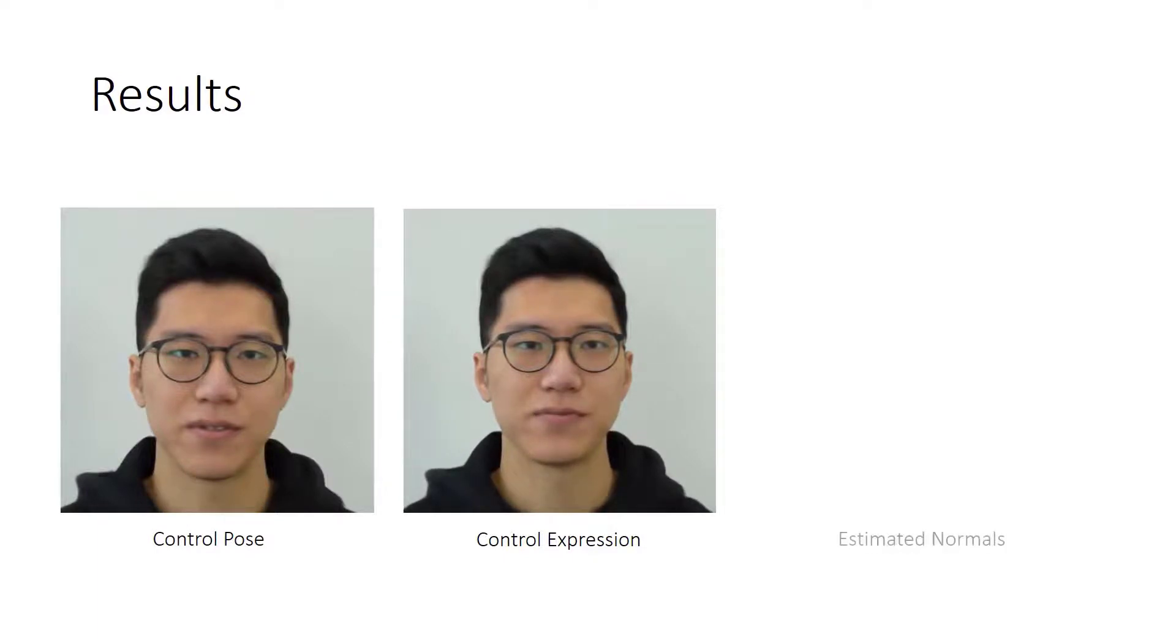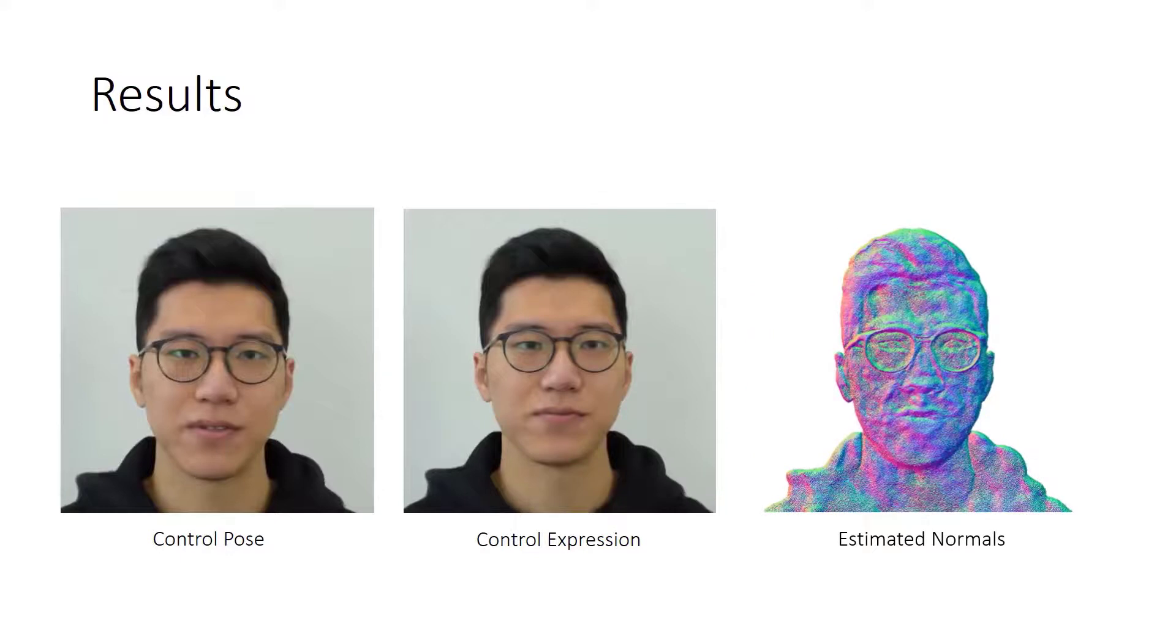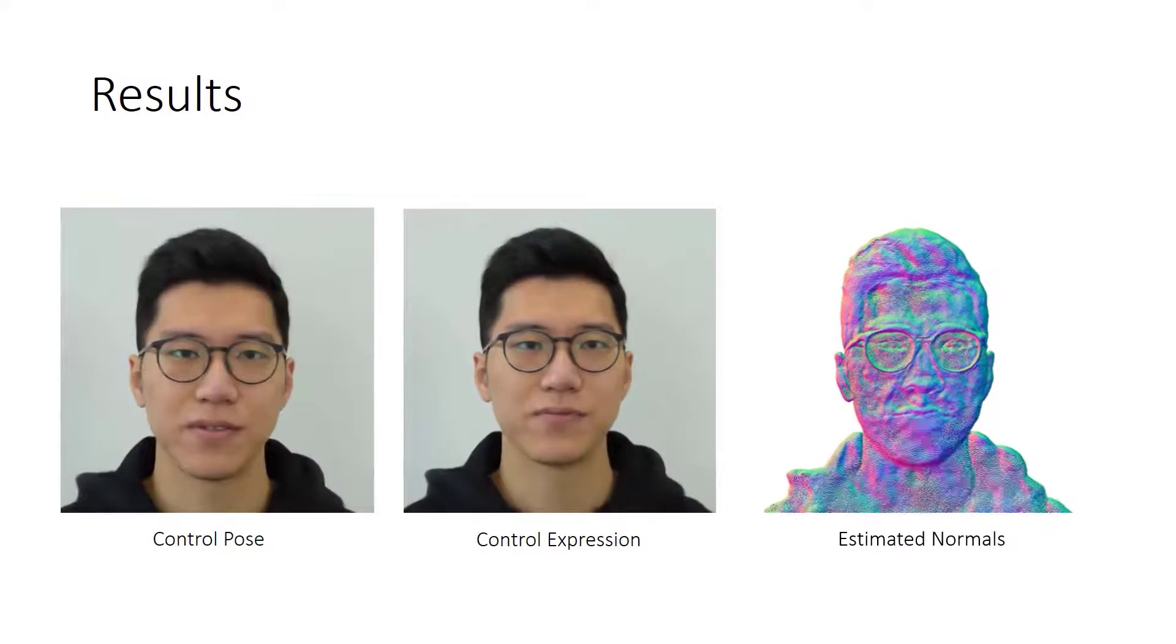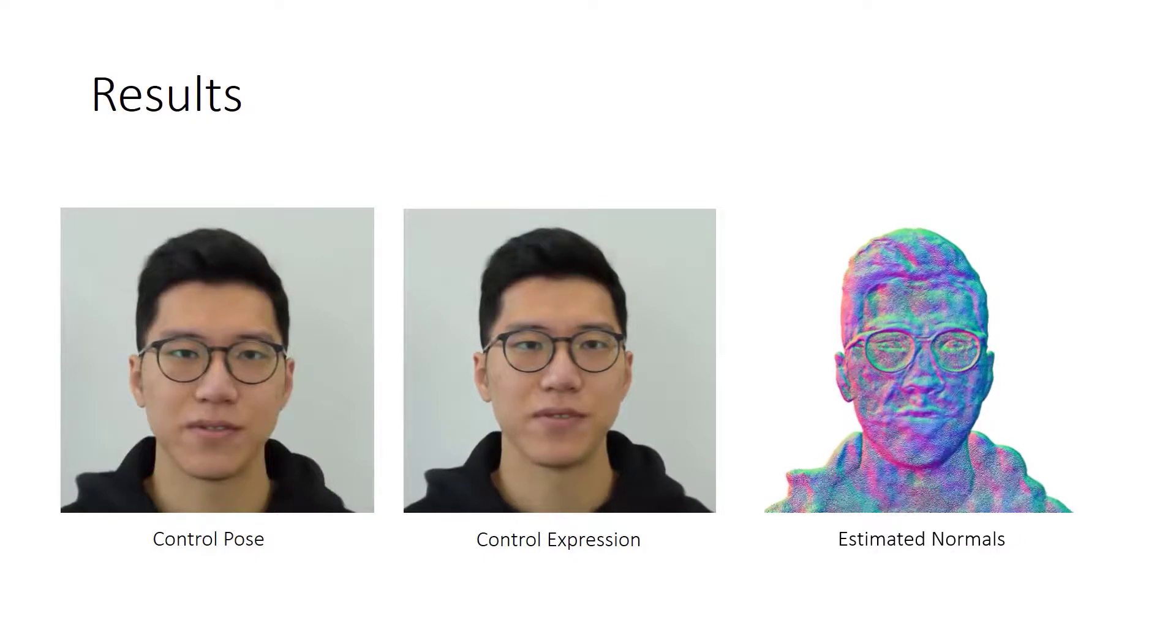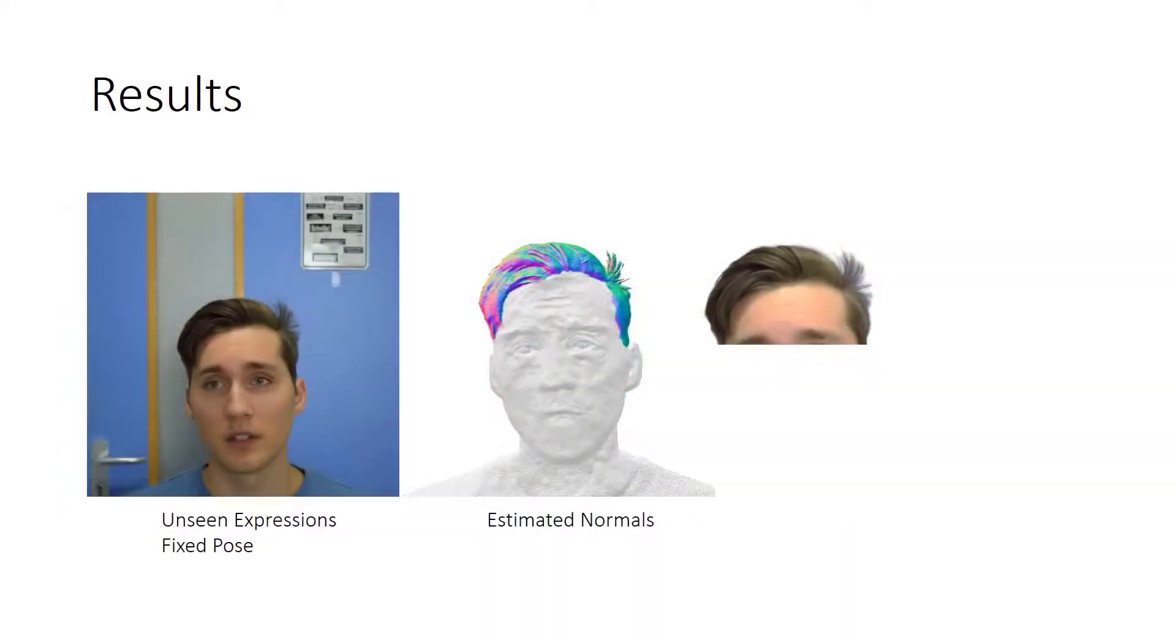To demonstrate this, we use the expected ray termination depth to render normal maps of the scene's geometry. Since our method does not rely on any proxy geometry, objects like eyewear and hair, which are typically difficult to reconstruct, are also captured by our approach.